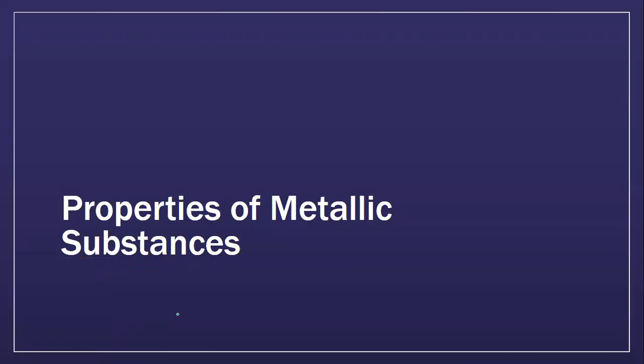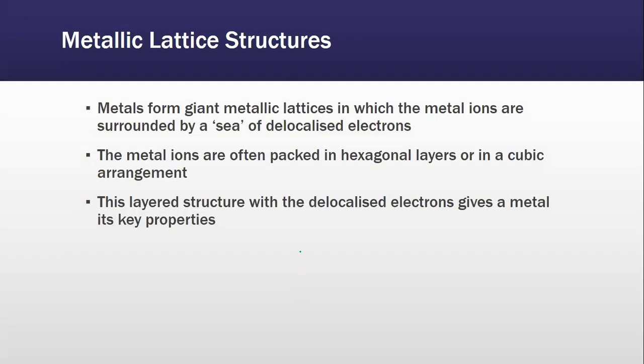Moving on to properties of metallic substances. Metals form giant metallic lattices in which the metal ions are surrounded by a sea of delocalized electrons. Metal ions are often packed in hexagonal layers or in a cubic arrangement. This layered structure with the delocalized electrons gives the metal its key properties.